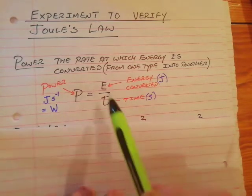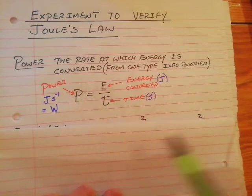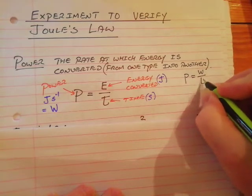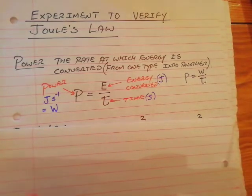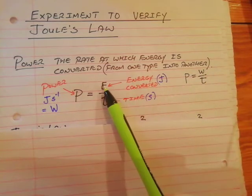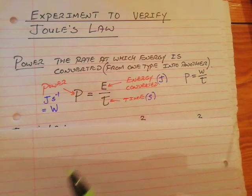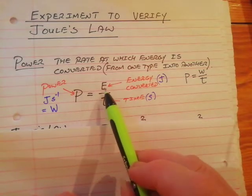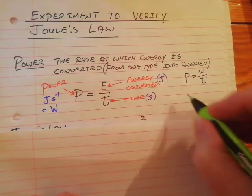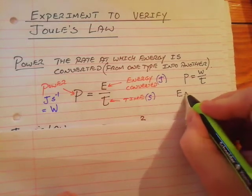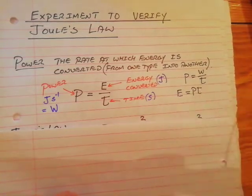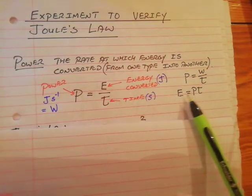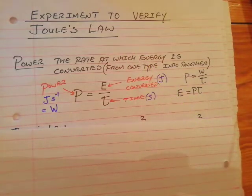Two things to bear in mind. One, that formula isn't actually in the maths tables — they give this version: power equals work done divided by time. That implies the work done on a system equals the energy it gains or loses. And if power equals energy over time, then the total amount of energy equals power multiplied by time — something we'll use in the Joule's Law experiment later.